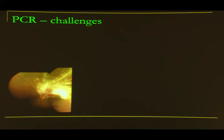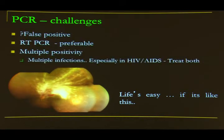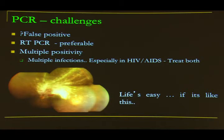In typical CMV retinitis with choroidal lesion, life is straightforward. But in atypical situations, PCR is needed. Challenges include the possibility of false positives; RT-PCR is preferable.